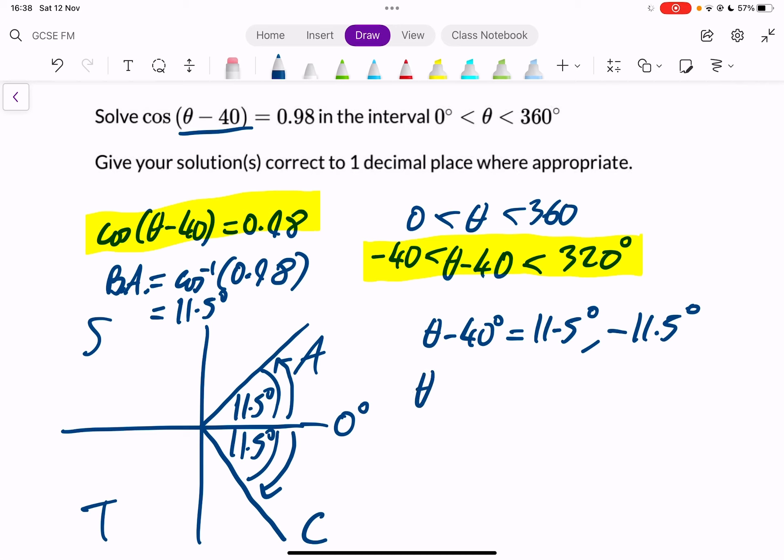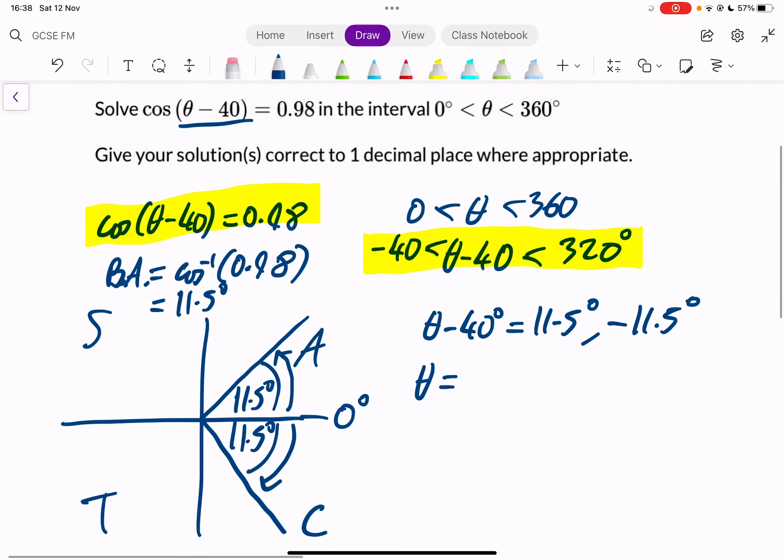So then we can just say theta is equal to, bring the 40 across and add 40 to both of these. 40 plus the 11.5 is going to be 51.5 degrees. And also, 40 plus the minus 11.5 will work out to be 28.5 degrees. And that should be our answers to one decimal place.